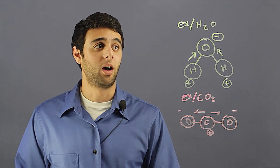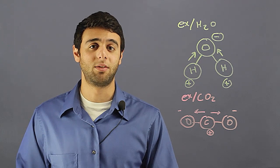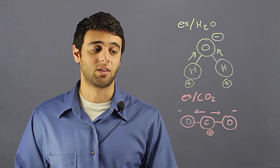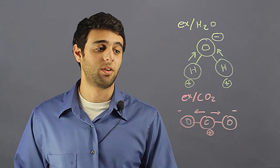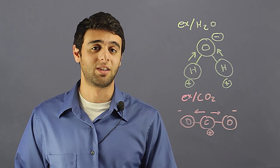So to recap, on the top we have an H2O molecule that is polar because of the uneven distribution of electrons. On the bottom, we have a nonpolar molecule, CO2, where the electrons are evenly distributed.